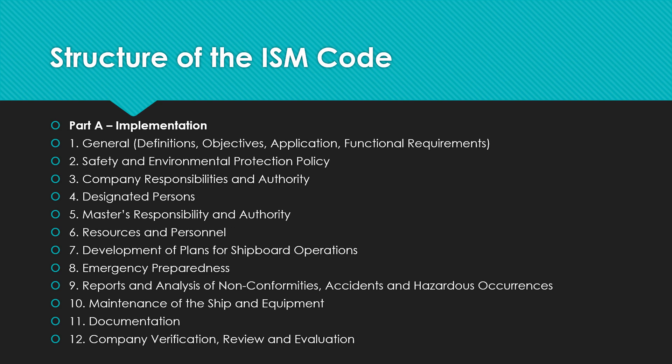Chapter 1 also details the functional requirements for a safety management system, specifying what kind of safety management system should be developed, implemented, and maintained by a shipping company. Part 2 talks about safety and environmental protection policy, which describes how the objectives given in Part 1 can be achieved.